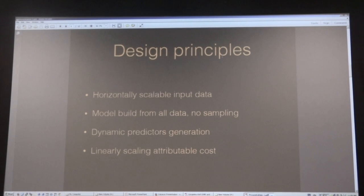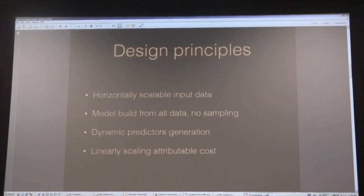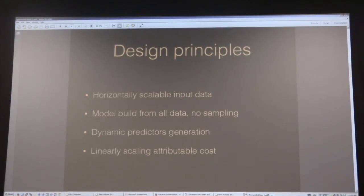Dynamic predictor generation — a lot of data science involves feature engineering. You're looking into the data trying to figure out what predictors are good, doing PCA to project and things like that. That's a problem for us: when we have 50 customers, we don't have time to build predictors and figure out what works for everyone — it has to be automated. And because we charge each client individually, we have to scale and attribute the cost individually. We can't stand up a giant Hadoop cluster first without a customer base.